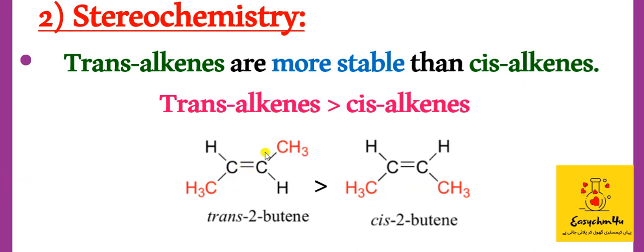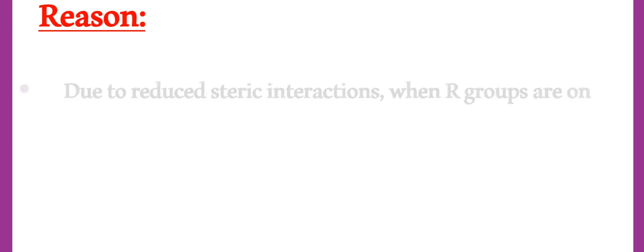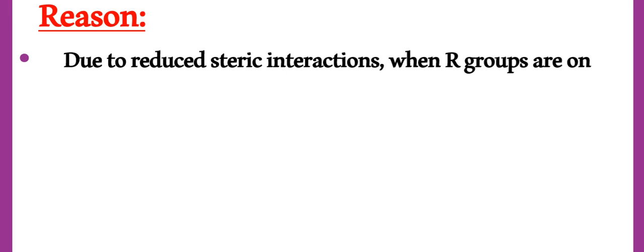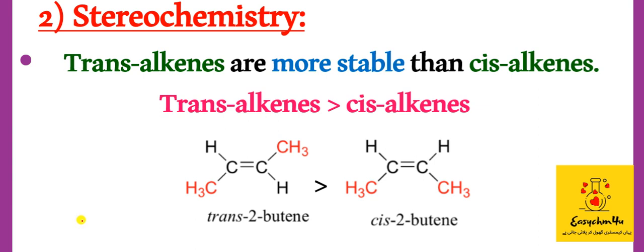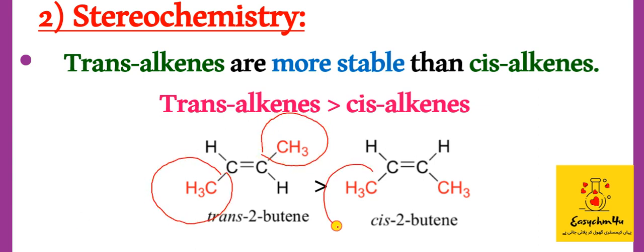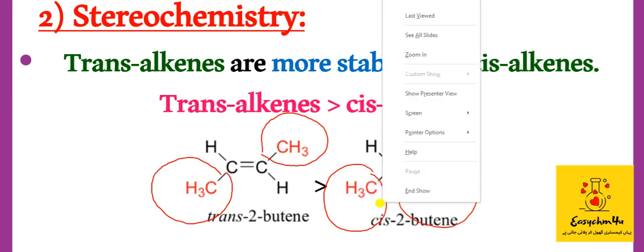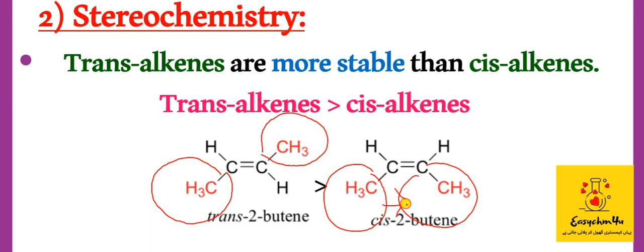The second factor is stereochemistry — cis and trans alkenes. Trans means when the two alkyl groups are on opposite sides of the double bond, and cis means when two alkyl groups are present on the same side of the double bond. Trans alkenes are more stable due to reduced steric interactions. When R groups are on the opposite side, steric repulsion is reduced, making it more stable. In cis alkenes, bulky groups on the same side cause steric repulsion, making them less stable and more reactive.